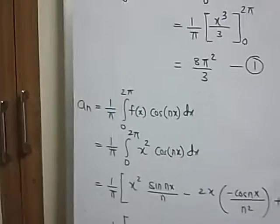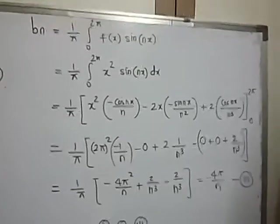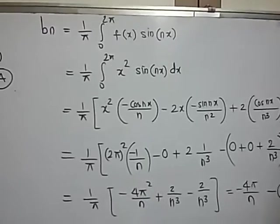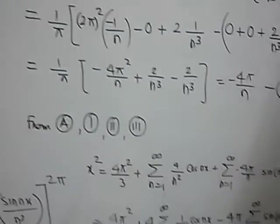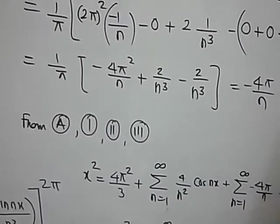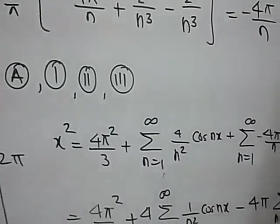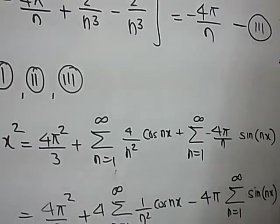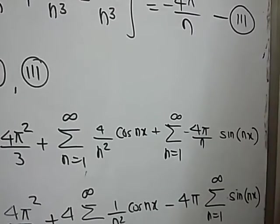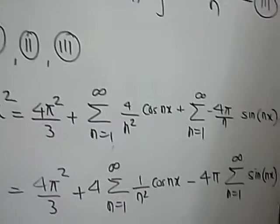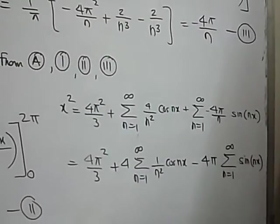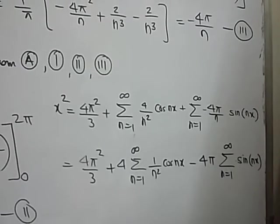Now we got a₀. We got aₙ. We got bₙ. Now put this value of a₀ into equation A. So it was a₀ divided by 2. a₀ was 8π² by 3. So a₀ by 2 is 4π² upon 3 plus sigma n to infinity aₙ value into cos(nx) plus sigma n to infinity bₙ value into sin(nx). And that becomes the Fourier series expansion of the given function x².